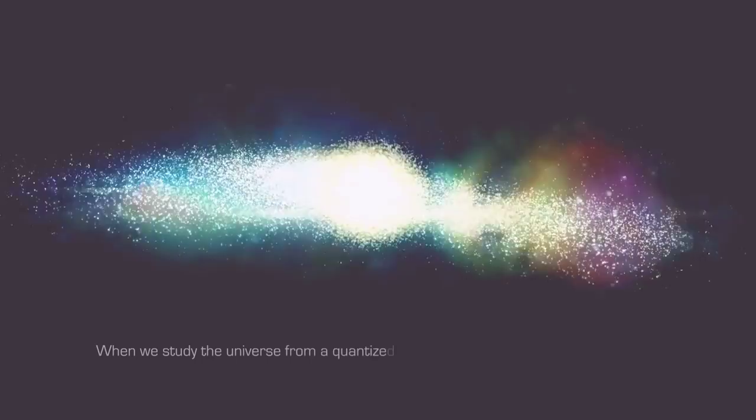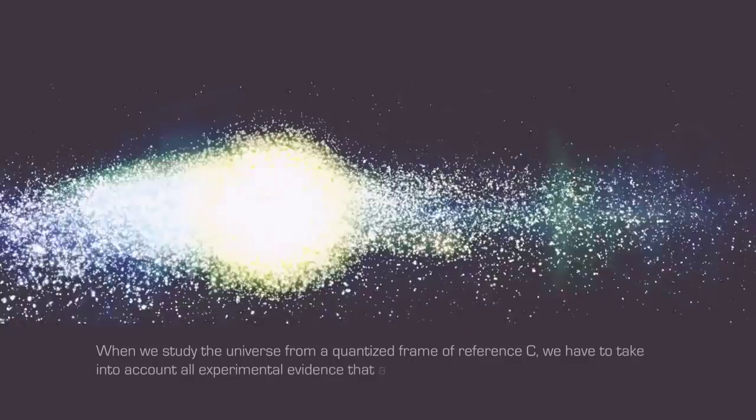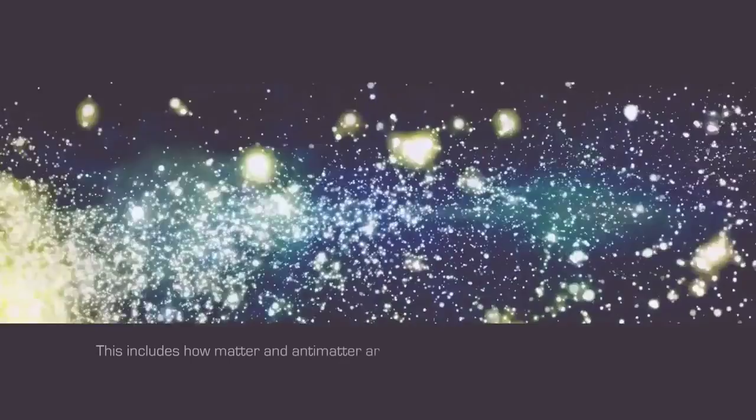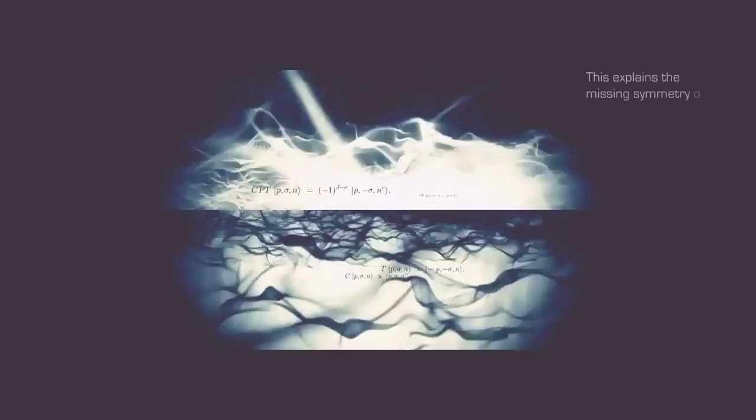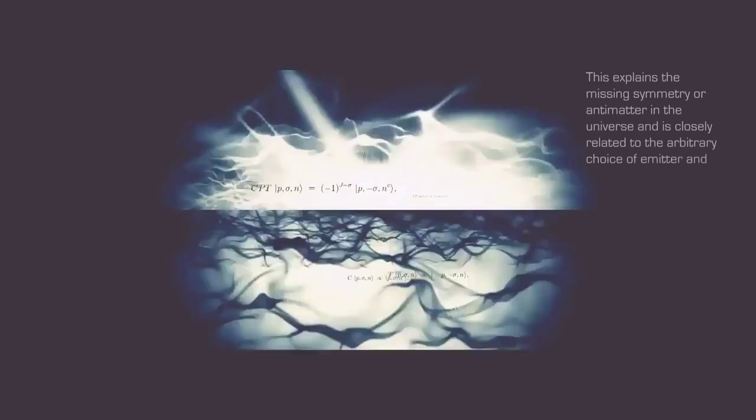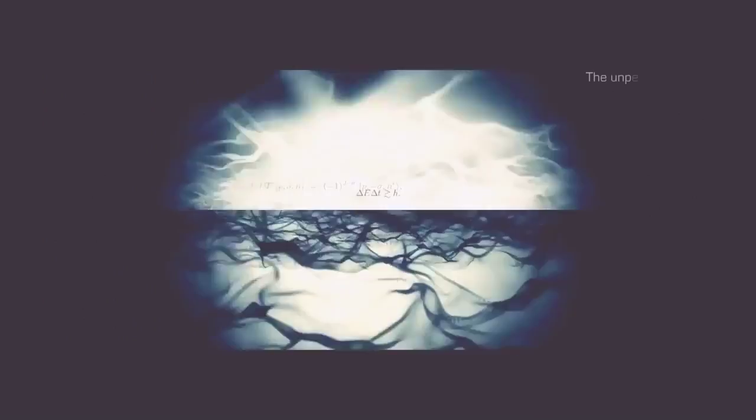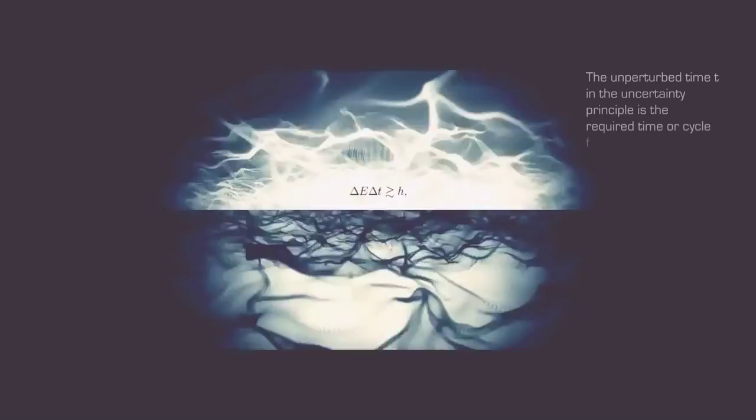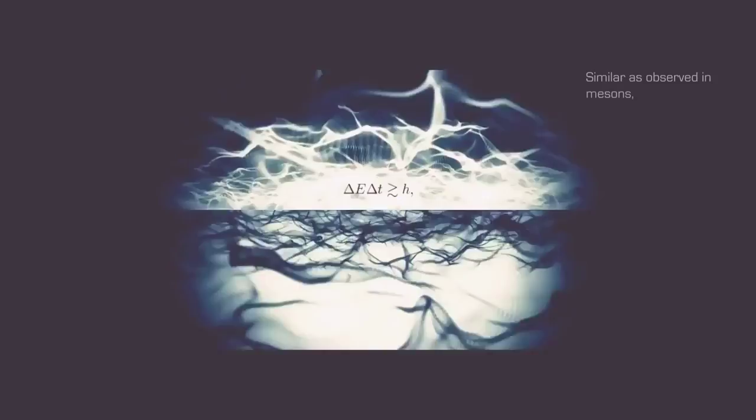When we study the universe from a quantized frame of reference C, we have to take into account all experimental evidence that applies to quanta. This includes how matter and antimatter are created simultaneously in particle accelerators, and how mesons switch back and forth between one and the other. This has significant consequences when applied to C. From a quantum perspective, every instance of C has an anti-C. This explains the missing symmetry or antimatter in the universe and is closely related to the arbitrary choice of emitter and absorber in the Wheeler-Feynman time-symmetric theory. The unperturbed time-t in the uncertainty principle is the required time or cycle for quanta to exist. Similar as observed in mesons, our personal experience of time or interval of the current moment reaches its threshold when C is cancelled out by its anti-C.